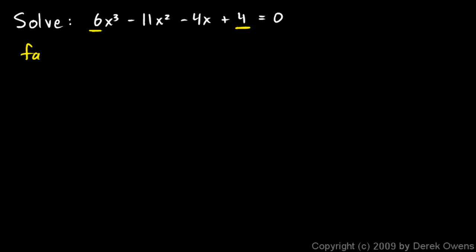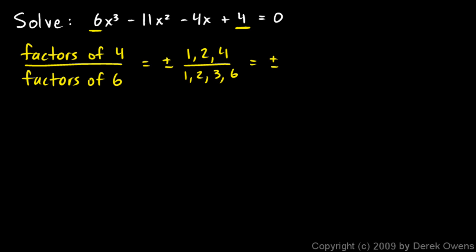I look at the 4 and the 6, and I think factors of 4 divided by factors of 6. And factors of 4 are just 1, 2, and 4. And factors of 6 are 1, 2, 3, and 6. And I'm going to put a plus or minus sign out there. So this is going to give me a pretty big list. I can have 1 over 1, 1 over 2, 1 over 3, 1 over 6. Then I could have 2 over 1, 2 over 2 which is already in the list, I could have 2 over 3, and 2 over 6 that's already in the list right there. And I could have 4 over 1, 4 over 2 is already in the list, 4 over 3 is a possibility, and 4 over 6 is already in the list. So this is a list.